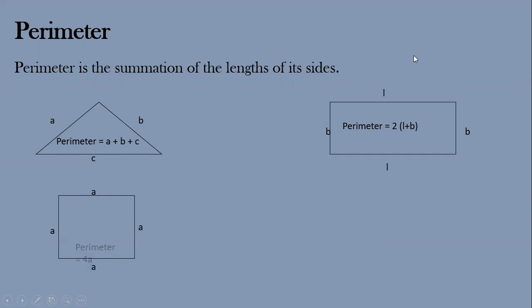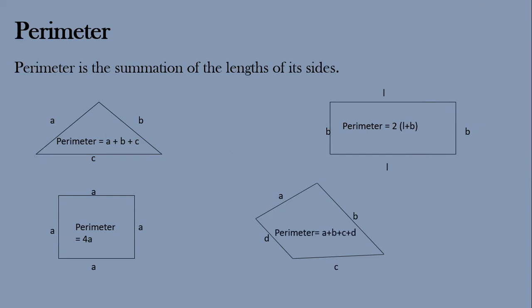If all sides are equal, then the perimeter will be 4 times the side. Now this next shape is again a type of quadrilateral with four sides. For a quadrilateral, the sides are all different, so its perimeter will be a + b + c + d. This is very straightforward.